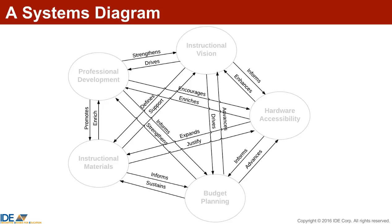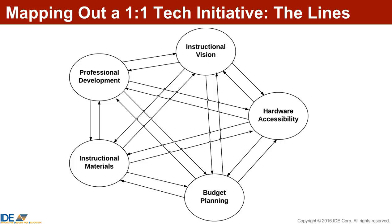More often than not, initiatives succeed or fail based on the interrelationships that exist among the nodes, represented by an arrow from each node to every other node. Each line in a systems diagram represents the impact one component has on another. The pair of lines between two components explains the interrelationships. Each component depends upon the other. The words to describe these interrelationships should be descriptive, meaningful, and nuanced.